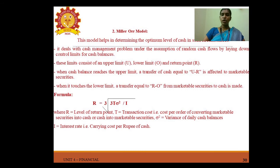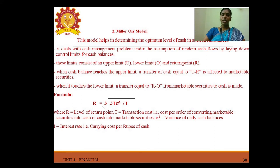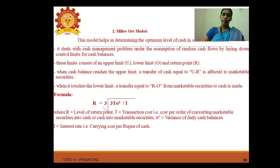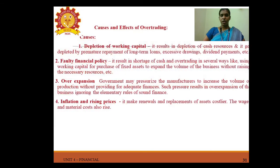Miller-Orr model: this model helps in determining the optimum level of cash under assumptions of random cash flows, by laying down control limits for cash balance. These consist of an upper limit, a lower limit, and a return point. When cash balance reaches the upper limit, cash equal to the upper limit is transferred to marketable securities; when it touches the lower limit, a transfer from marketable securities to cash is made. Formula: R = ∛(3T² ÷ i).